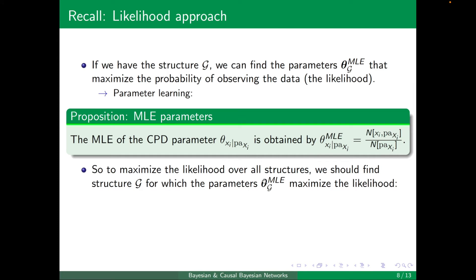it's equivalent to finding the structure, G, whose parameters theta_MLE of G maximizes the likelihood. So max over G, max over theta of this whole likelihood term is, of course, equivalent to finding only the G, whose likelihood is maximized under MLE.